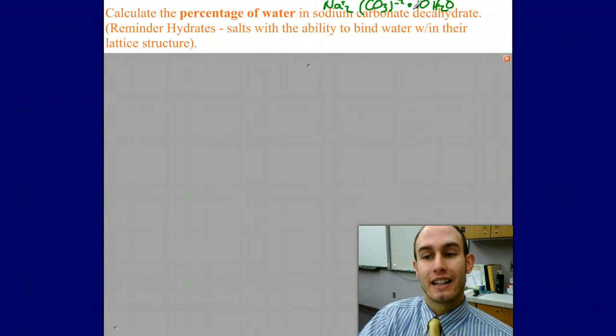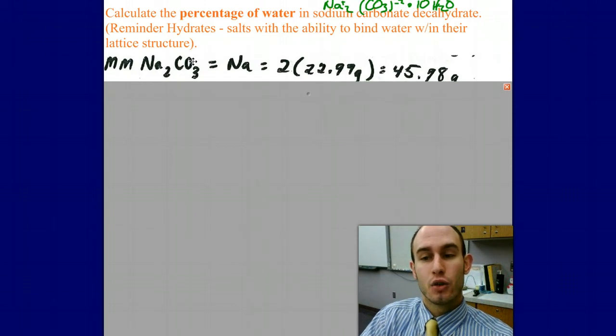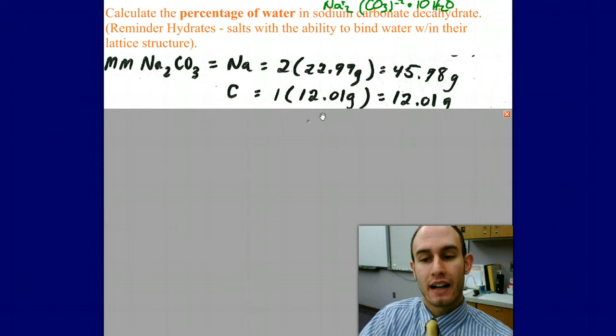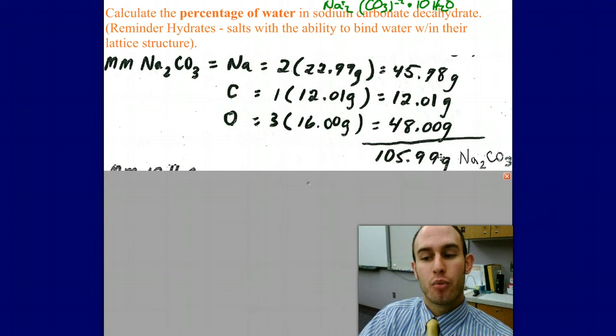From here I can get the formula mass or molar mass of my compound. There's my Na2CO3. I'm going to have 2 Na's multiplied by their mass on the periodic table. I'm going to combine that with 1 carbon's mass as well as 3 oxygen masses to get 105.99 grams of Na2CO3 sodium carbonate.